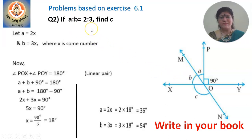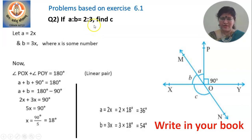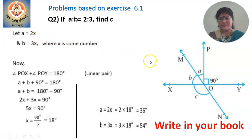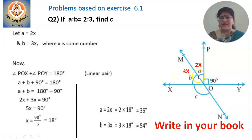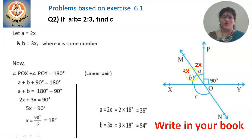I have mentioned this before — whenever the ratio is given, you have to assume the common multiple to be X. So if A is to B equal to 2 is to 3, then we assume A to be 2X and B to be 3X.